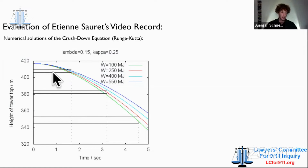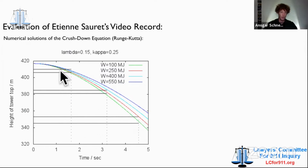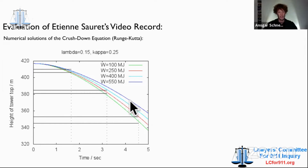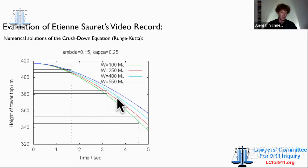Here you see these horizontal lines — these are the measurements I showed you. In the middle of these lines is the actual empirical value, and the lines represent error bars, so the roof line is somewhere between these error bars. This axis indicates the height of the tower top, and this is time. These color graphs indicate the movement of the roof line as computed by the physical model — these are not measured data, these are data from the physical model, indicated here for four different upward forces. I want to emphasize the red graph, the 250 megajoule solution.